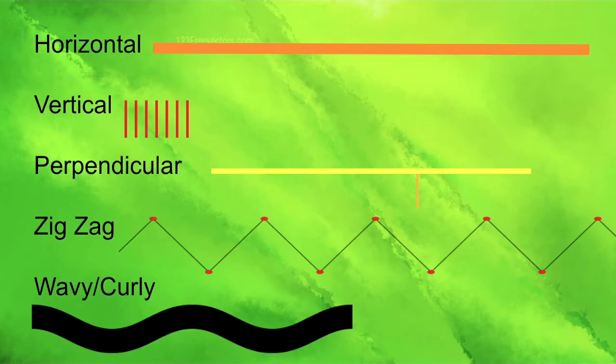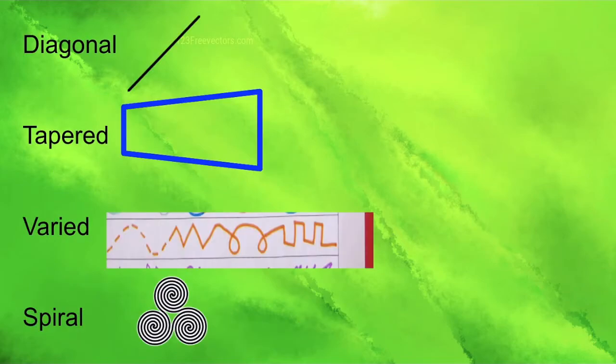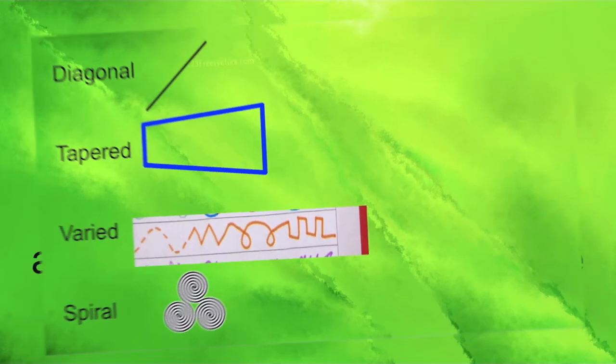Horizontal versus vertical lines. Zigzag. Wavy and curly lines. Diagonals. Tapered. Varied. Spiral. You can use lines to help tell a story when you're thinking about design, and think about that as you are designing any part of technical theater.